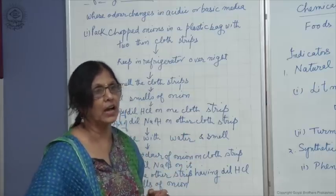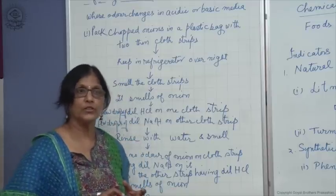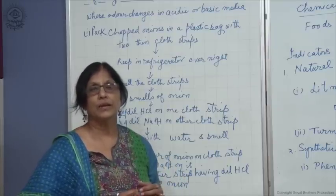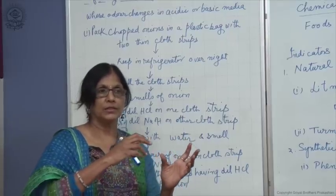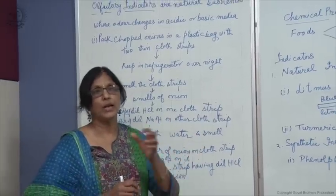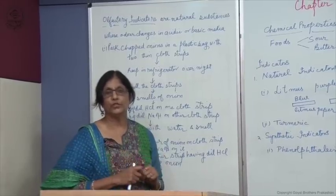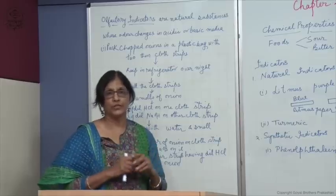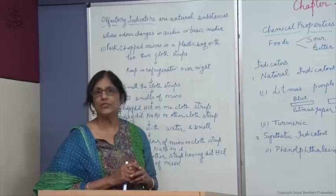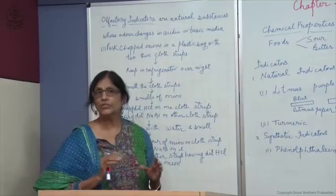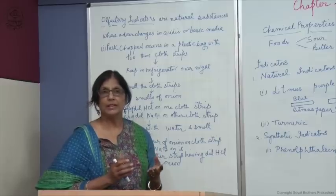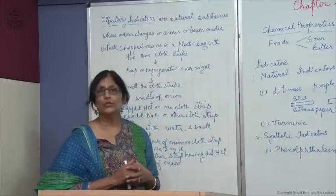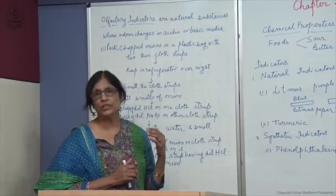Other olfactory indicators include vanilla essence and clove oil. Vanilla essence can be used to indicate acids and bases. Add a drop of vanilla essence to test tubes containing dilute HCl and dilute NaOH. The test tube with dilute NaOH does not smell of vanilla, while the test tube with dilute HCl still smells of vanilla. So bases can be detected by vanilla essence, and we can indicate acids and bases using olfactory indicators.